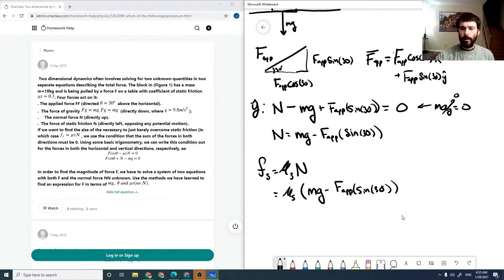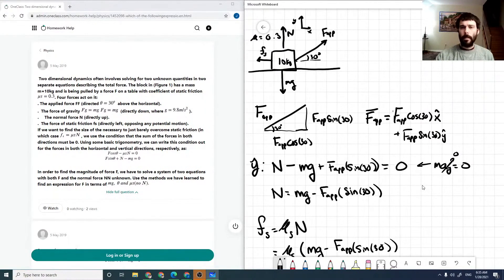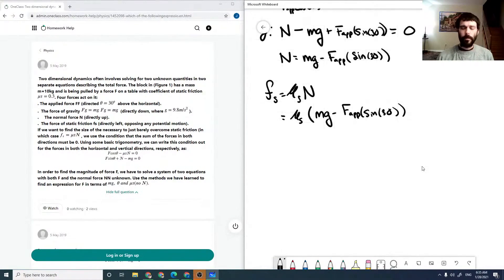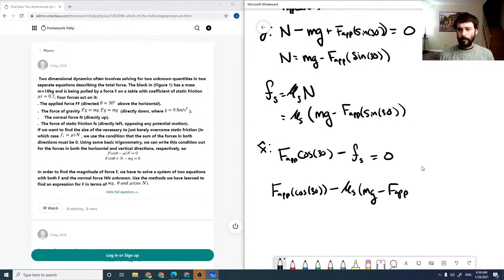Now if we look in the x-direction, right now we just have the x-component of our applied force and our static friction. So we just have our applied force times the cosine of 30 minus our static friction, and that equals zero. So then our applied force cosine of 30 minus our static friction equals zero.